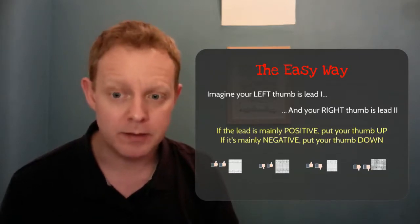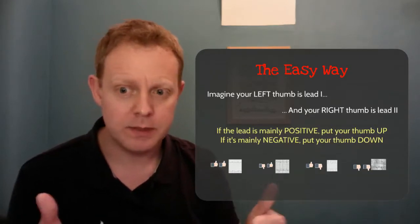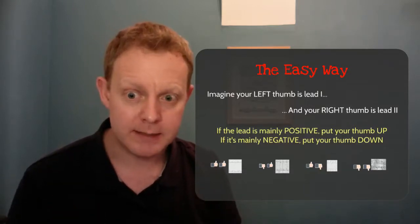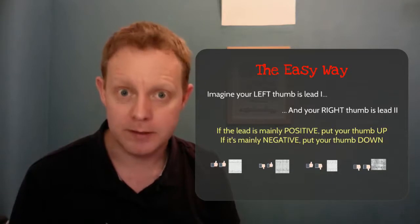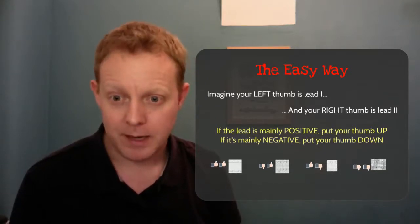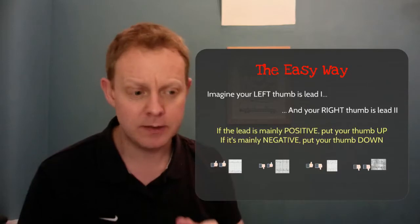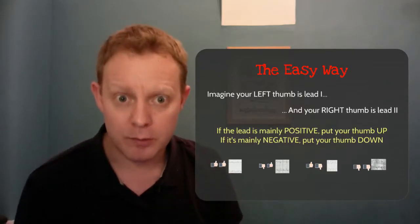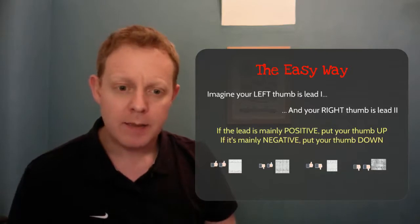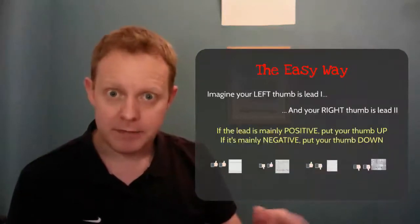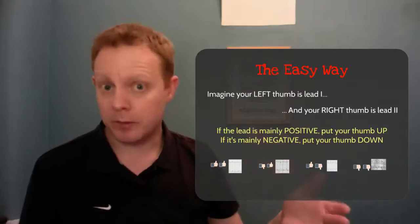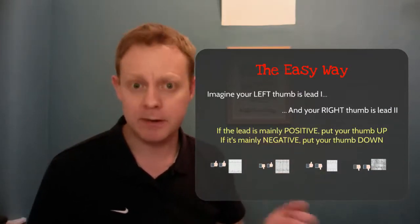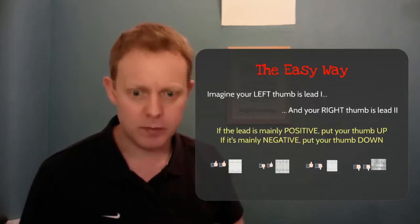We're going to use the thumbs up method. You've got two thumbs. If lead one has a QRS complex that's going predominantly upwards then you're going to put your left thumb up. If it's going predominantly downwards - so the S wave is deeper than the R wave - then you're going to put that thumb down. Imagine that your right thumb is lead two, and again if the QRS complex is going predominantly upwards then you're going to put your thumb up. If the S wave is deeper than the R wave then you're going to put your thumb down.